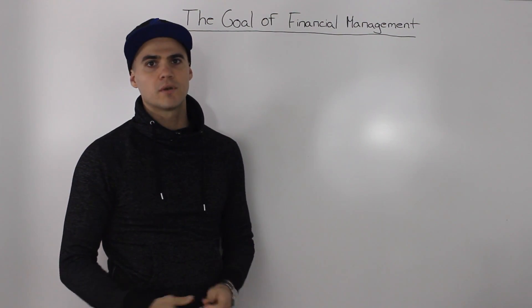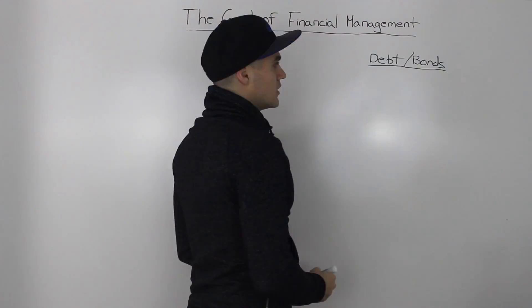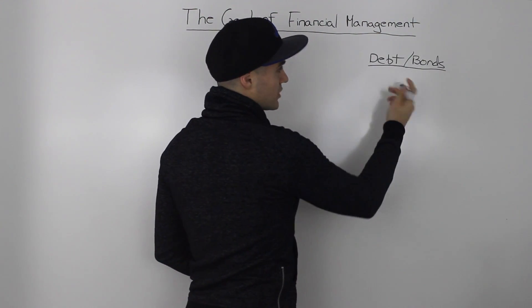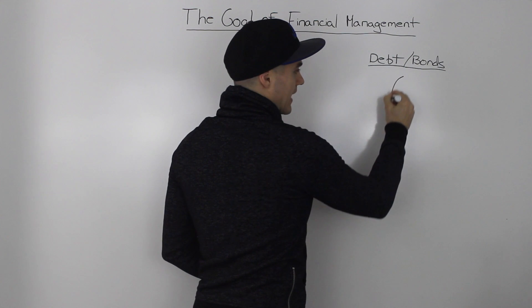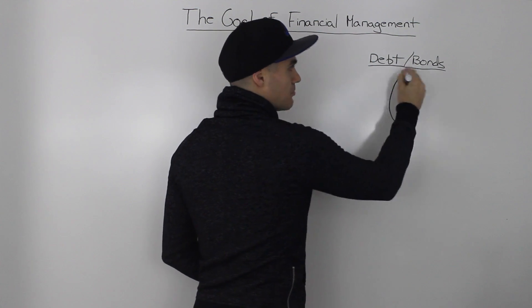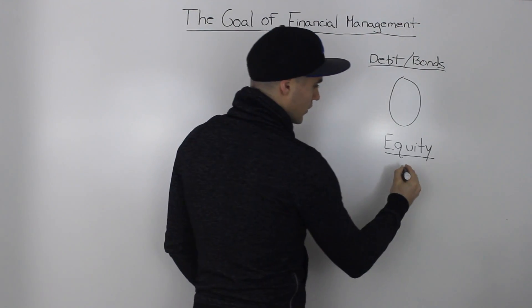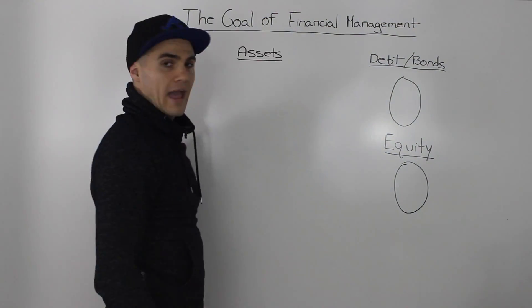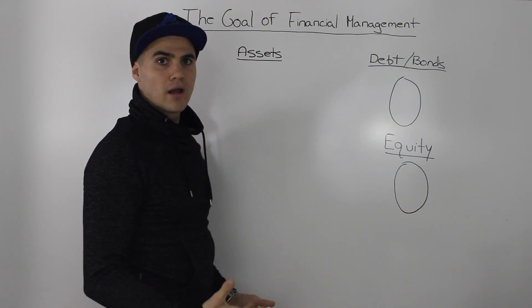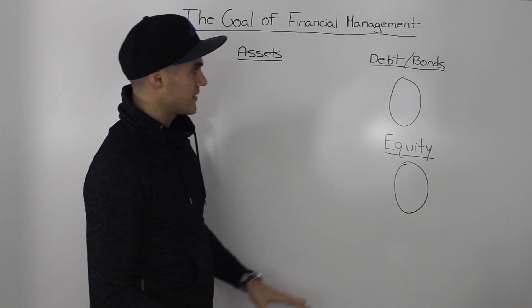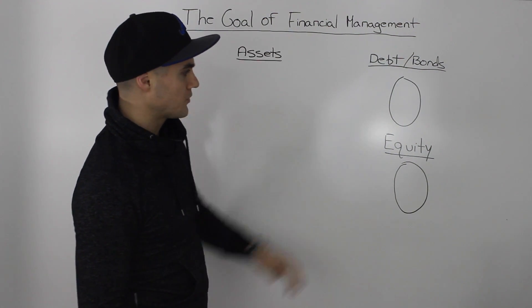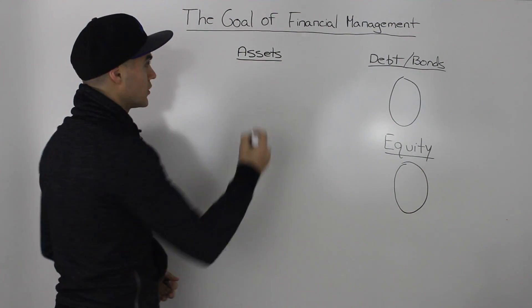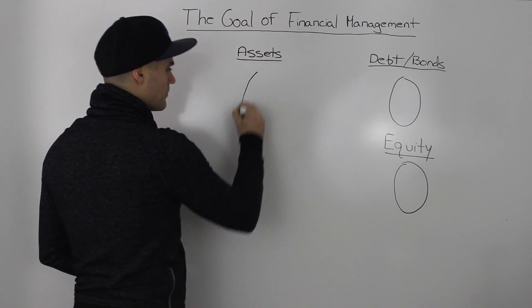When you're starting a company you're going to need some money. So you're going to go in the market and raise a bunch of debt — another word for debt is bonds — and you're also going to issue some equity. Then, taking that money you raised from debt holders and equity holders, you're going to buy assets for your company.